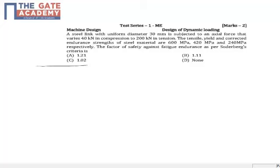Let's discuss a question from machine design. You have a steel link with uniform dimension, so this is a cylindrical link. An axial force is varying from 40 kilonewton in compression to 200 kilonewton in tension.